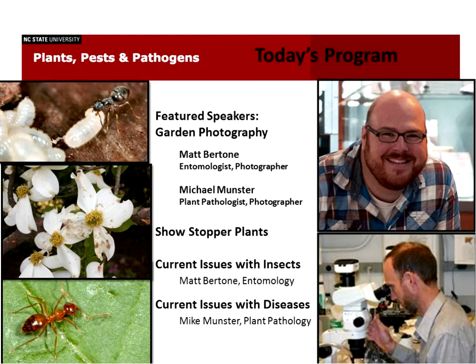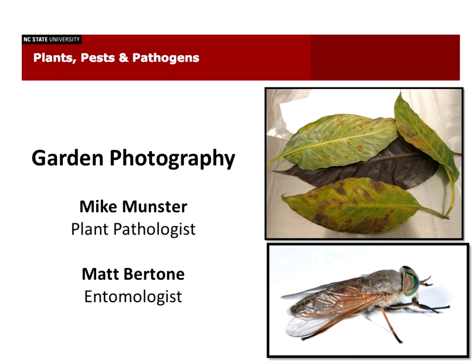So the rest of our program today is outlined in this slide. We're going to be talking about garden photography, particularly garden photography for diagnostics and identification. And we'll have our showstopper plants, then current issues with insects, and current issues with diseases. First up is garden photography. We've got Mike Munster, our plant pathologist, and Matt Bertone, our entomologist, both of whom are excellent photographers who are going to be sharing tips and strategies with us today. Welcome.